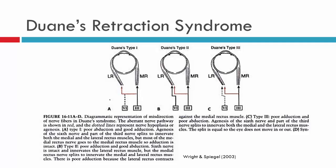Here we have a schematic diagram by Wright and Spiegel depicting Duane's Syndrome and the variations in its clinical characteristics. In the first example, the third nerve innervates the medial rectus and also the lateral rectus, with significant agenesis of the sixth nerve — so very little innervation reaches the lateral rectus, and we'd expect very little abduction. In the next scenario, the third nerve supplies the medial rectus and also miswires to the lateral rectus, but there is also good sixth nerve innervation of the lateral rectus. In this instance, we would expect good abduction but poor adduction, because as the medial rectus contracts, the lateral rectus also contracts, preventing appropriate adduction.